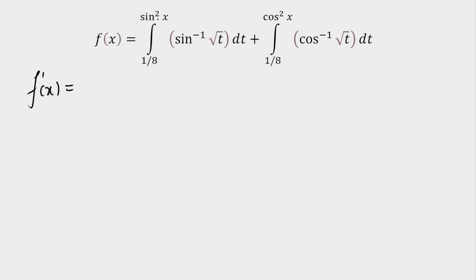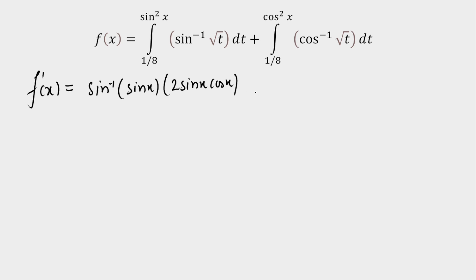Applying Leibniz theorem: differentiation of the first integral means putting the upper limit into the function, giving sin⁻¹(√(sin²x)) = sin⁻¹(|sin x|). Since x is from 0 to π/2, this is sin x, as sine is positive in the first quadrant. Differentiation of sin²x gives 2 sin x cos x. Differentiating the lower limit gives 0, so that term vanishes.